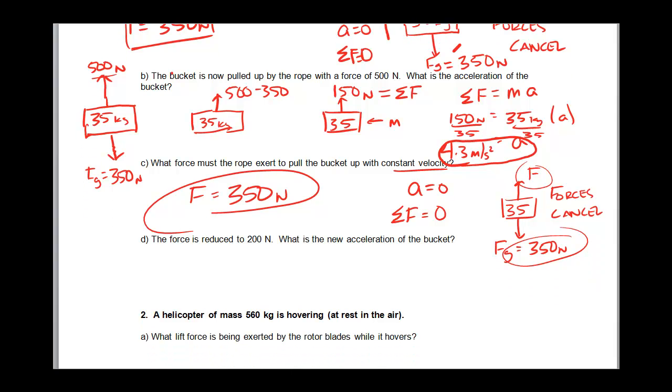So the force is reduced to 200 newtons. What's the new acceleration of the block? We have a 35 kilogram block. We're pulling up on that block with 200 newtons. And gravity is pulling down on that block with 350 newtons. Just like it did over here. That doesn't change. So for our 35 kilogram block, we have 200 up.